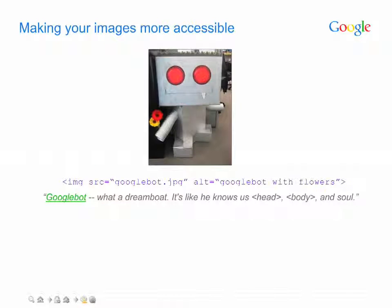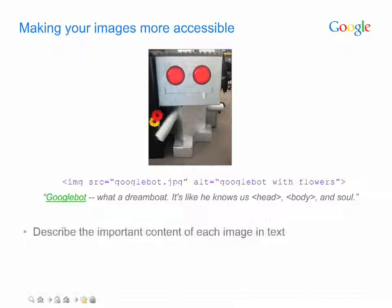As previously noted, images can be tough for Google to index. There are some things you can do, however, to help us better understand the images on your site. Annotate your image in alt text, as shown above, and optionally in plain visible text near your image. Your visible comment before or after the image can be whatever you like, but it's best to stick with a concise version for the alt text.